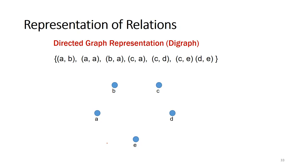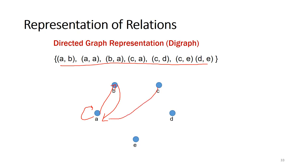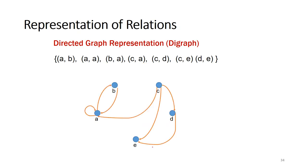To represent a relation using a directed graph (digraph), we take the pairs and draw the graph. For example, with pairs AB, AA, BA, CA, CD, CE, and DE: A has a self-loop (AA), edges go from A to B, B to A, C to A, C to D, C to E, and D to E. This digraph describes the relation, and it's very useful.